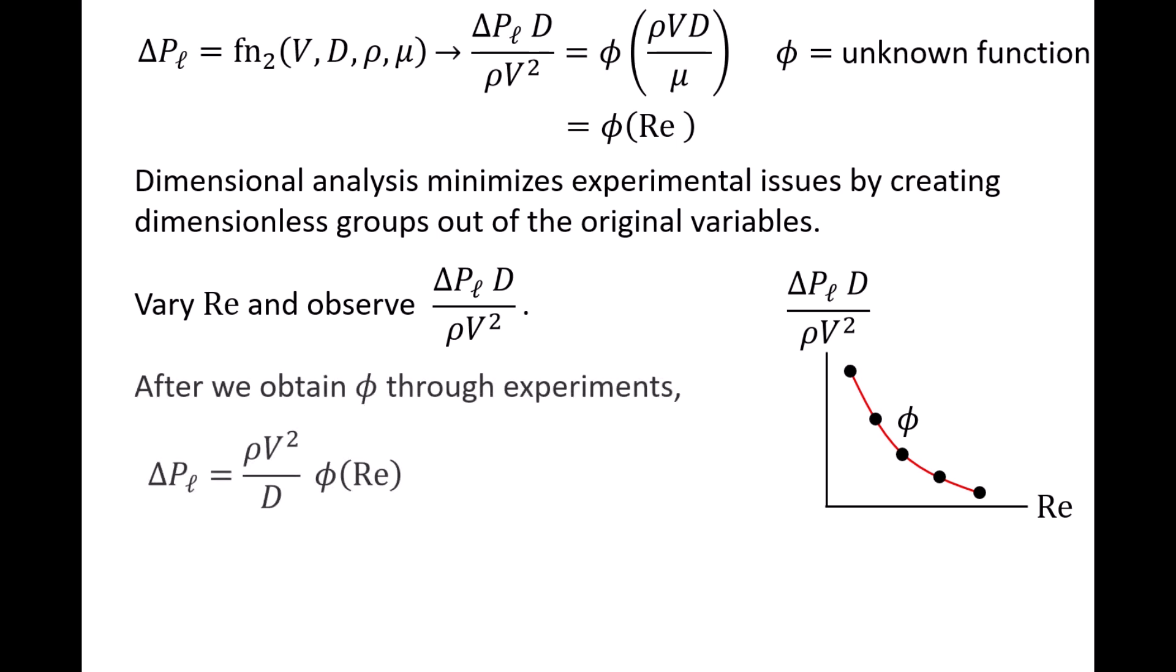After we find the functional relationship phi from the experimental data, we can rearrange the equation to isolate the dependent variable delta PL. We now have an equation for the pressure drop per length of pipe in terms of the original variables. But how do we know how many dimensionless groups are needed to study a particular problem experimentally?